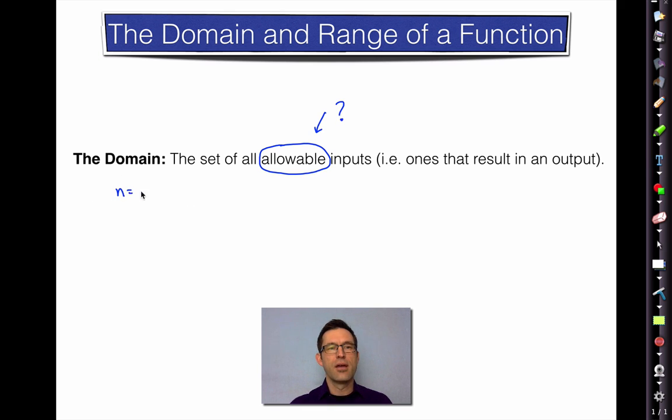Allowable sounds like a strange word. What does that mean? Let's say that n was the number of texts that we send, and let's say that we signed up for some kind of plan that charged us 25 cents per text. So this would be the formula, the function, that would convert the number of texts that we sent into how much we were charged. Well, certainly something like 10 would be part of the domain. I can put 10 texts in and figure out how much it's going to cost me.